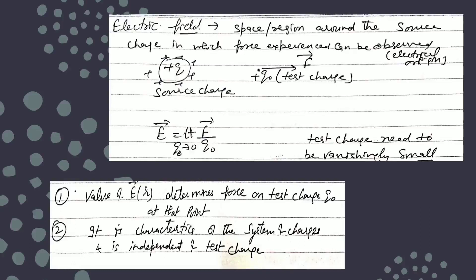The value of E at a particular position r means finding the force on the test charge at that point. It is a characteristic of the system of charges and is independent of the test charge, because when you divide F by q₀, you are left with kQ/r². So if Coulomb's law is clear, you can write the expression for the electric field.